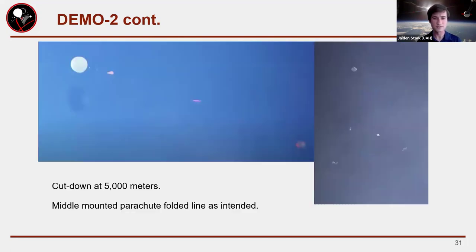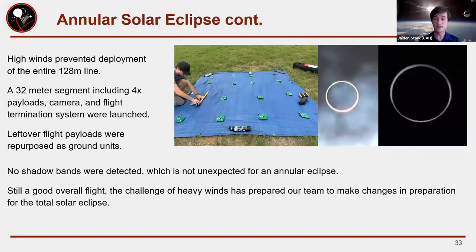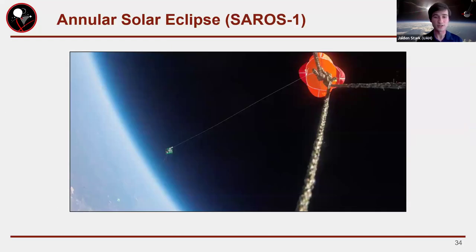We flew Demo 2 to an altitude of five kilometers. There's telescope footage of that flight, and on cut-down you can see the parachute at the top and the line folding into a V-shape — our line-folding descent worked as intended. We brought the system out to Poteet, Texas for the annular eclipse, but it was very windy and very overcast, so we did not deploy to full extent. We disconnected a section and flew it as a traditional balloon with four instruments; no shadow bands were detected, which was expected for an annular eclipse.